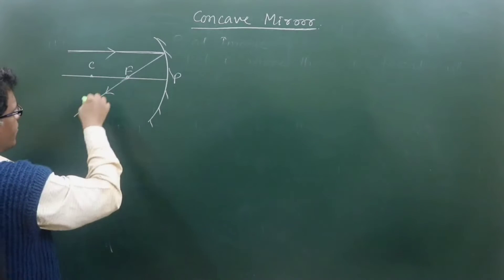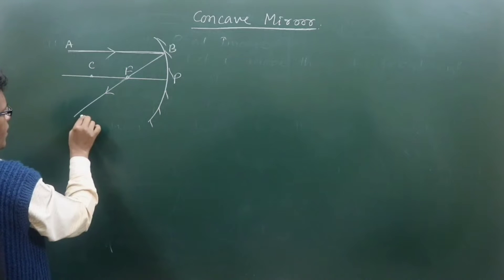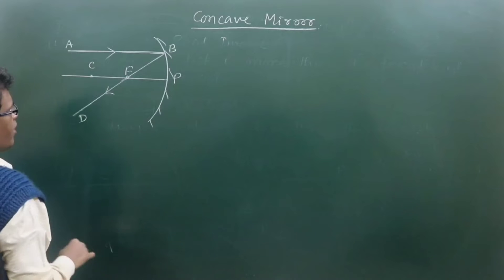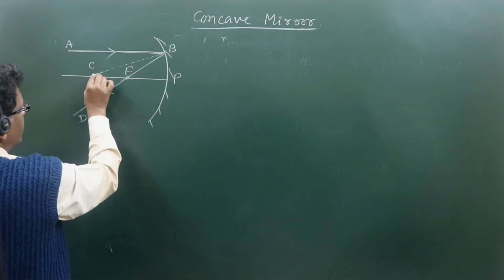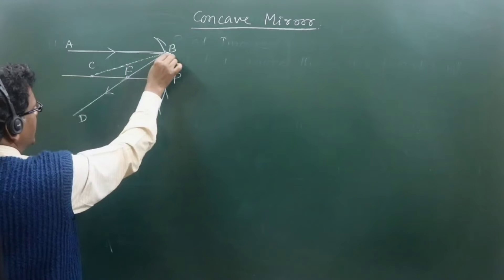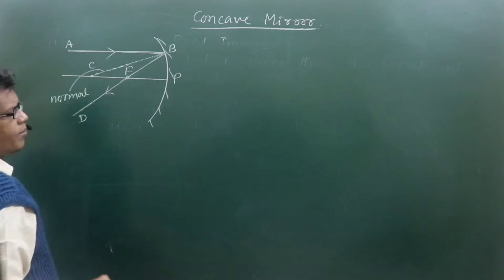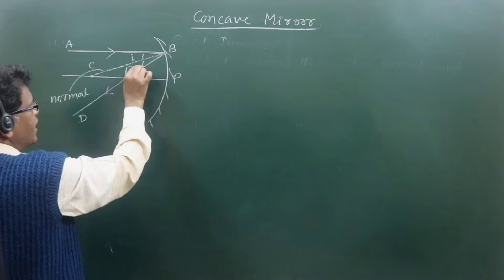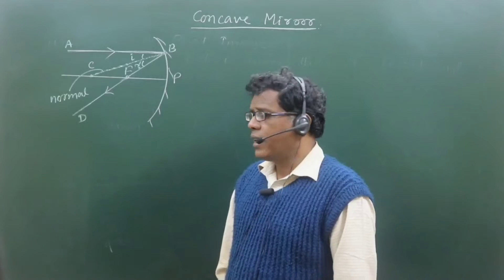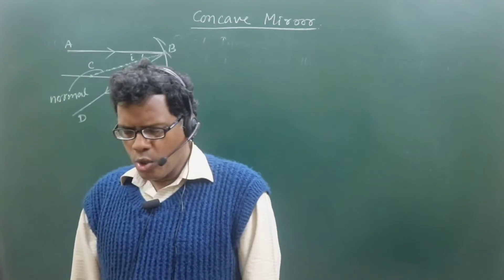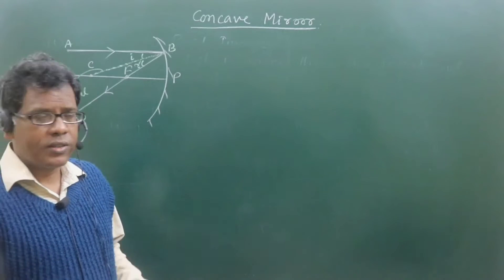Now, what is the reason for this, and how does the law of reflection hold here? If you take this light ray — say incident ray A to B, and reflected ray B to D — you join the center of curvature with the point of incidence, and that line becomes the normal. This gives the angle of incidence and angle of reflection, confirming that the law of reflection is verified: incident rays drawn parallel to the principal axis, after reflection, will definitely pass through the focus.